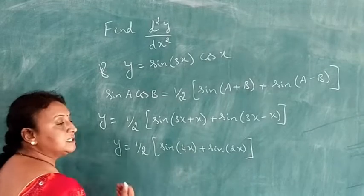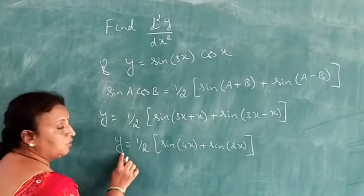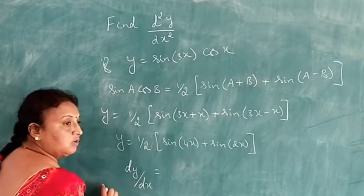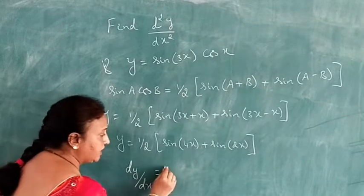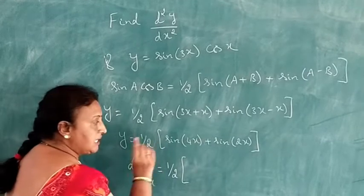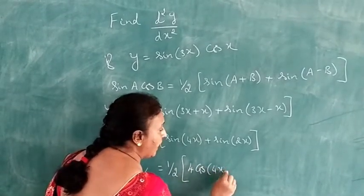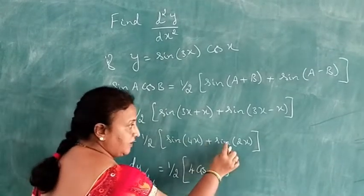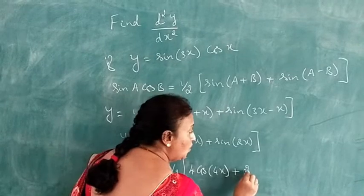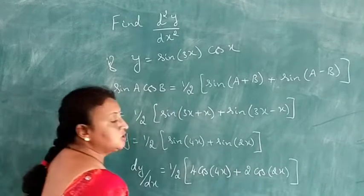Now differentiate with respect to x to get the first derivative. dy/dx equals 1/2, with the constant kept as is. Derivative of sin 4x is 4 cos 4x, plus derivative of sin 2x is 2 cos 2x.